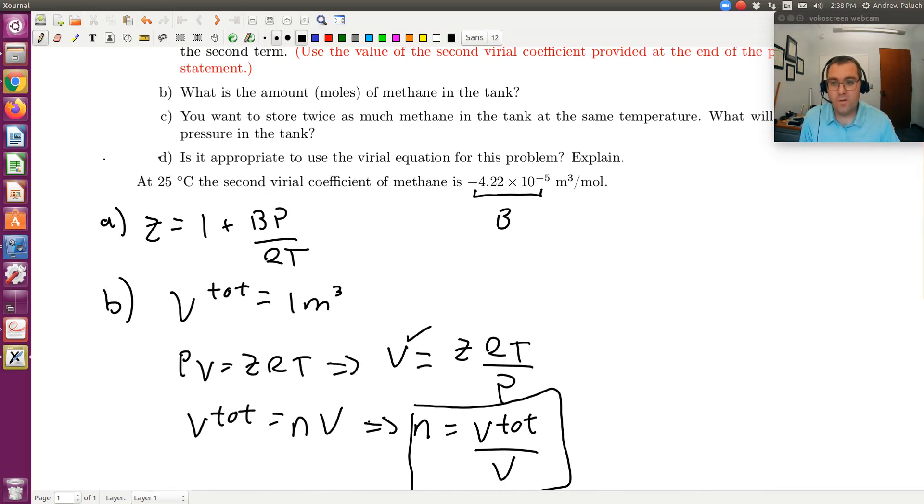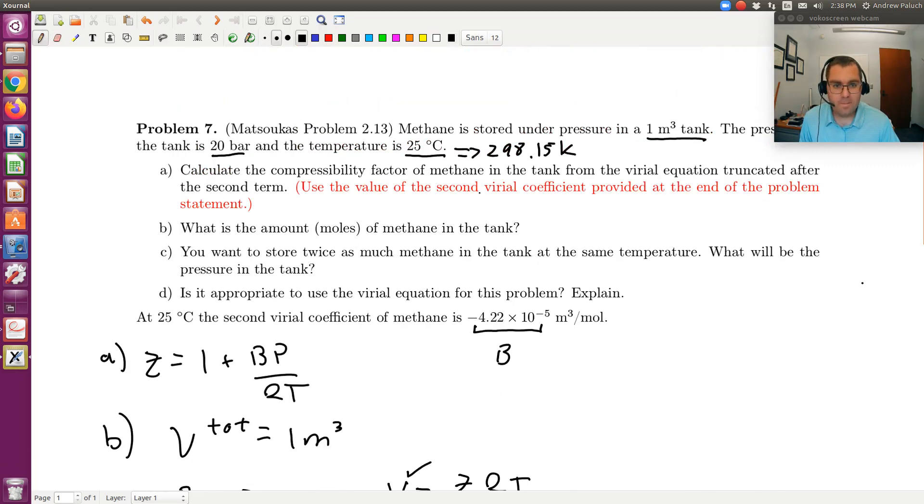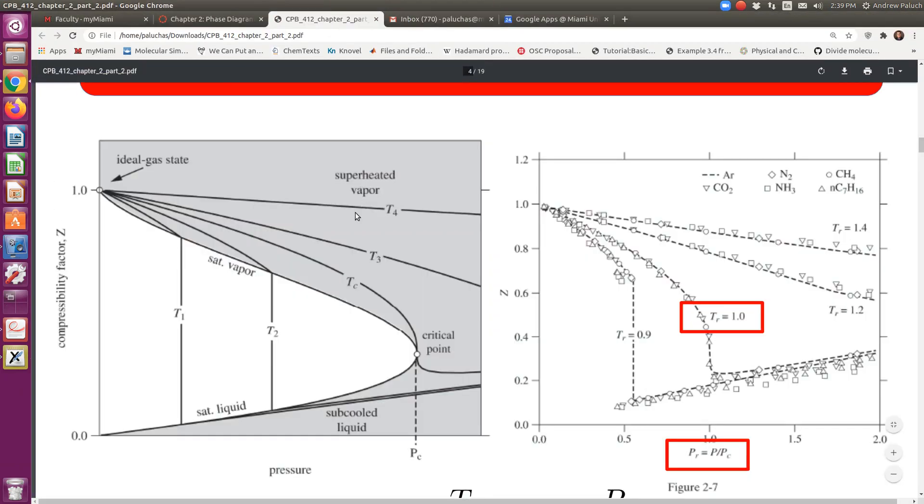And then D, is it appropriate to use the virial equation of state for this problem? Well, this is then exactly like the last problem. So for A, temperature is 25 degrees C and 20 bars, you can go to the back of your book, appendix A, and you can look up the critical temperature and critical pressure for methane. Remember when you compute reduced coordinates, use absolute temperature. Pressure is okay if the units are bars, that is absolute pressure. But look up critical temperature and critical pressure, compute your reduced temperature and reduced pressure, and then go back to figure 2.7 from the text.